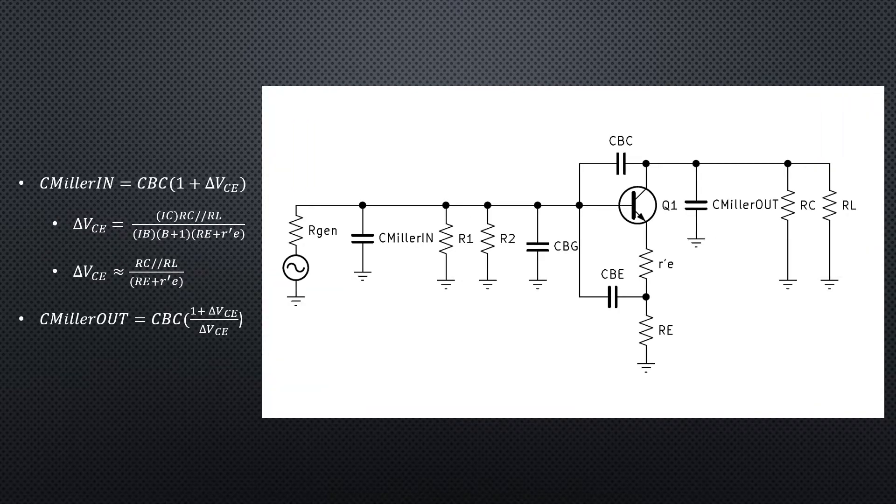Now we've got two capacitances to consider: C miller in and C miller out. C miller in can be found by multiplying CBC by the quantity 1 plus the gain of the amplifier in common emitter mode. C miller out equals CBC times the quantity 1 plus the gain common emitter divided by the gain common emitter.